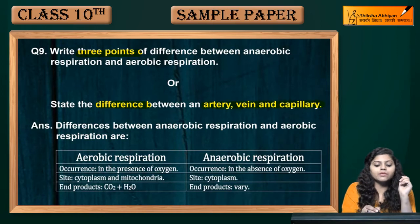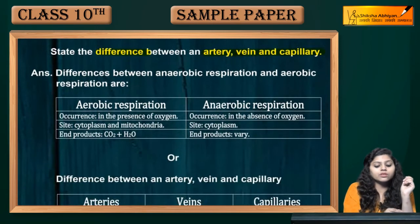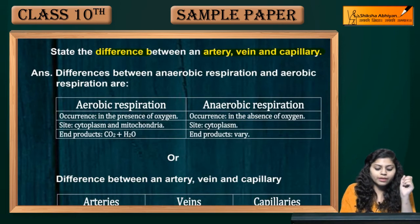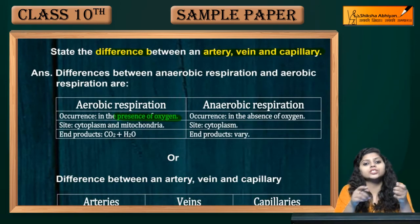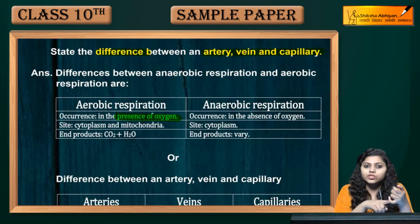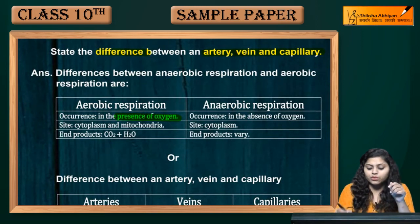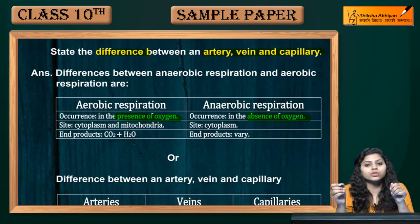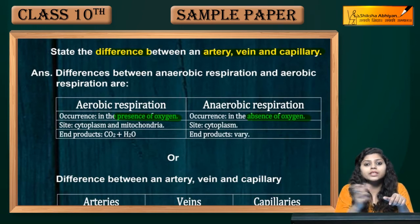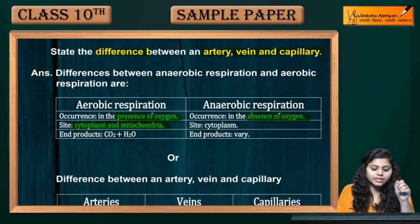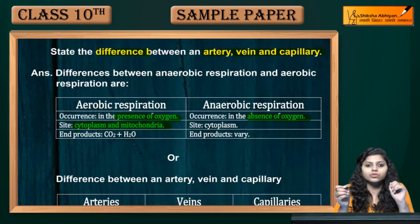First, we will talk about the differences between aerobic and anaerobic respiration. Aerobic respiration takes place in the presence of oxygen. What is the site? Aerobic respiration occurs in the cytoplasm and mitochondria.